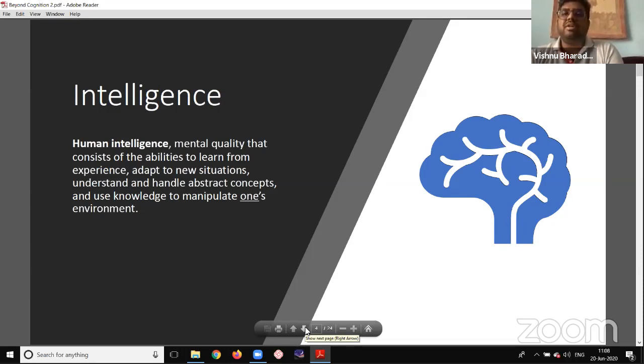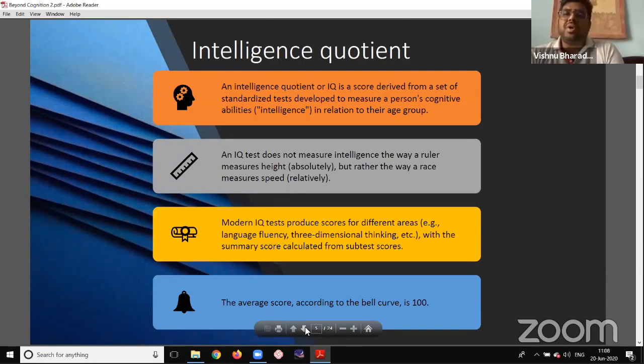Second area of focus is intelligence. We use the term intelligence as a measure of one's ability. Human intelligence is a mental quality that consists of abilities to learn from experience, adapt to new situations, understand and handle abstract concepts, and use the knowledge to manipulate one's environment. It's an ability to adapt to your surrounding environment. This is quite a relative phenomena.